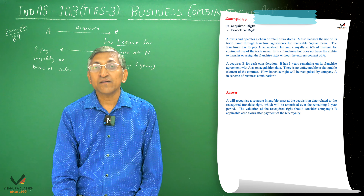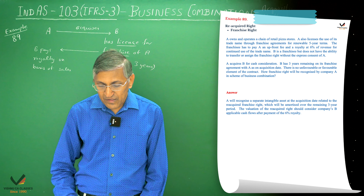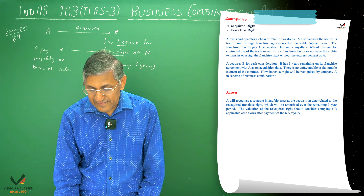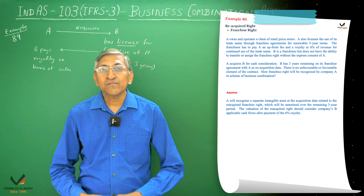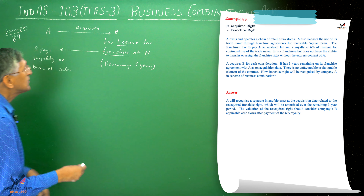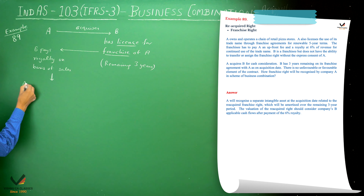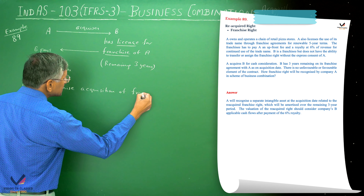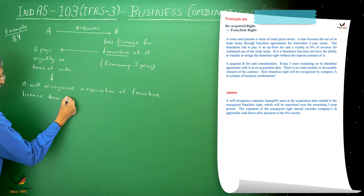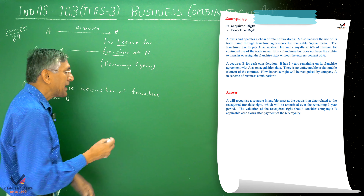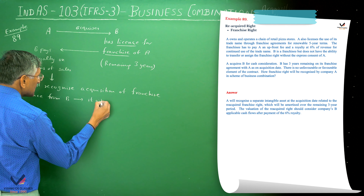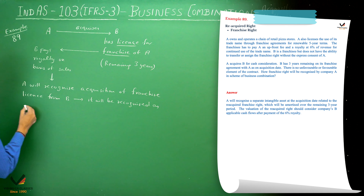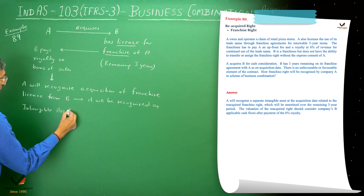There is no unfavorable or favorable element of the contract. The question asks how the franchise rights will be recognized by company A in the scheme of the business combination. The basic rule is that A will recognize the acquisition of the franchise license from B, and it will be recognized as an intangible asset.